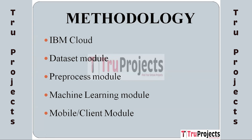The Pre-process Module converts missing or alphabetical data to numeric for machine learning readiness. The Machine Learning Module trains the dataset using diverse algorithms, weighs their performance, and selects the best performing model for patient condition prediction. The Mobile or Client Module handles test data upload from the client application; patient vitals are sent to the simulated cloud where machine learning algorithms predict health condition, and results are relayed back to the client.